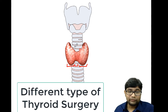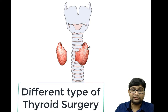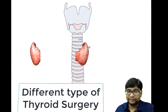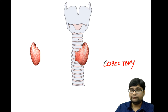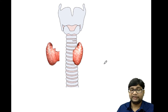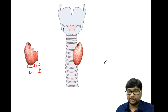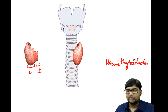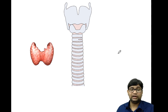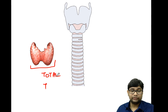If you remove one of the lobes, it is known as lobectomy. If you remove the lobe along with the isthmus, it is known as hemithyroidectomy. And if you remove the whole thyroid gland, that is known as total thyroidectomy.